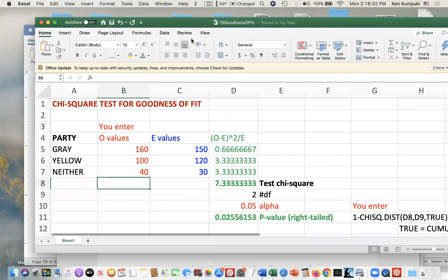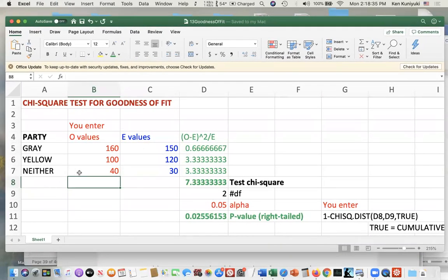So here's an Excel spreadsheet I made up. I've entered in the O values, the observed frequencies. 160 Gray Party members in our actual sample, 100 Yellow Party members, and 40 were neither, in our actual sample of 300 actual live voters. The expected frequencies are values based on the null. 150, 120, 30.